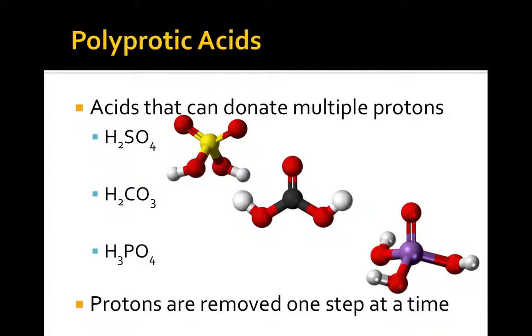As the name infers, polyprotic acids are acids that can donate more than one proton in Bronsted-Lowry acid-base reactions. These are models of three common examples, including sulfuric acid, carbonic acid, and phosphoric acid.